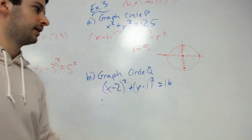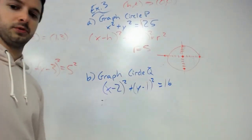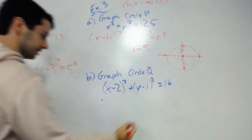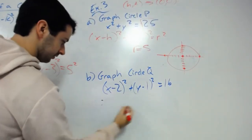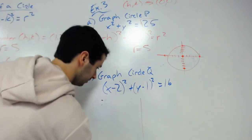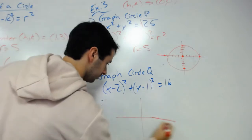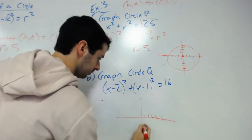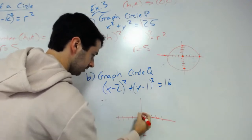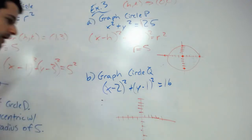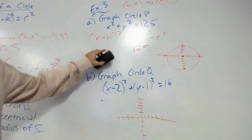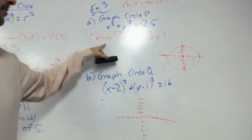I missed the dot there, but that would be what your circle would look like graphed. Now this one actually gives you h and k numbers here. I'm going to put five dashes up real quick.